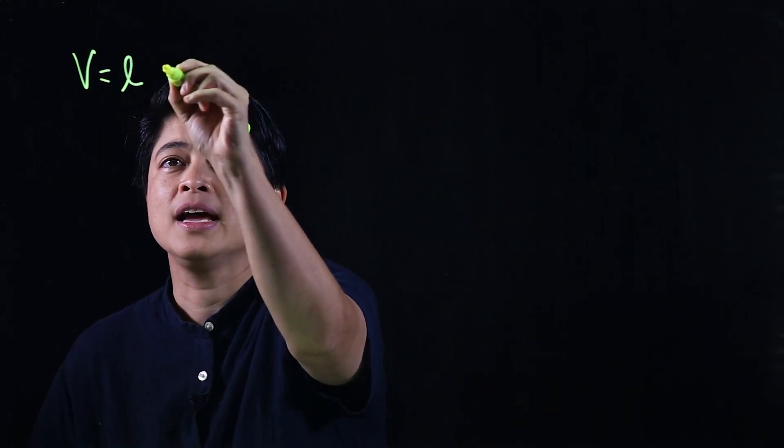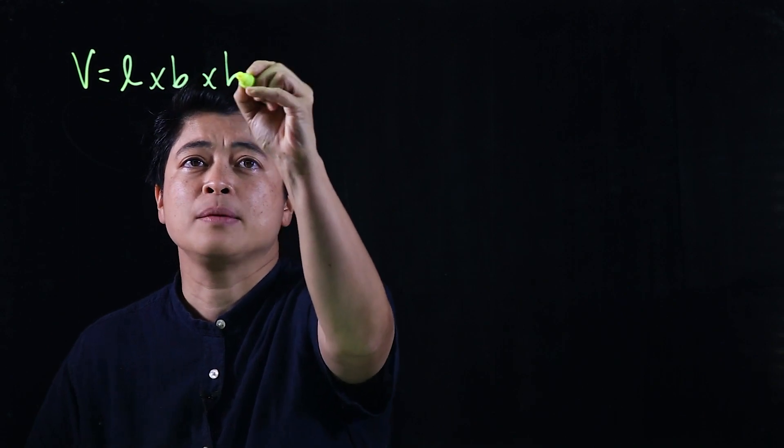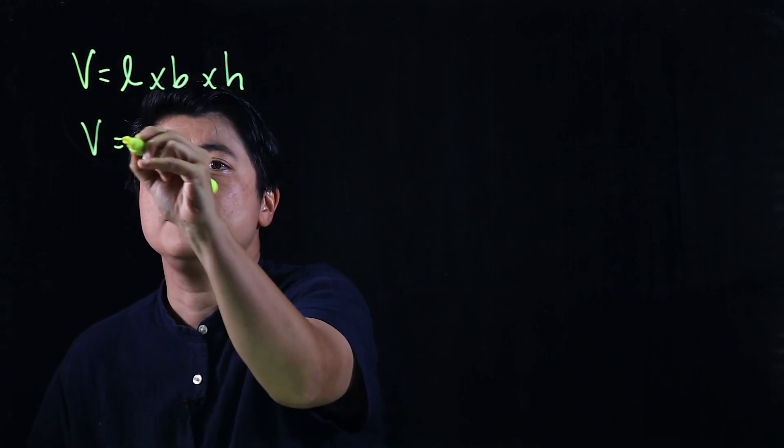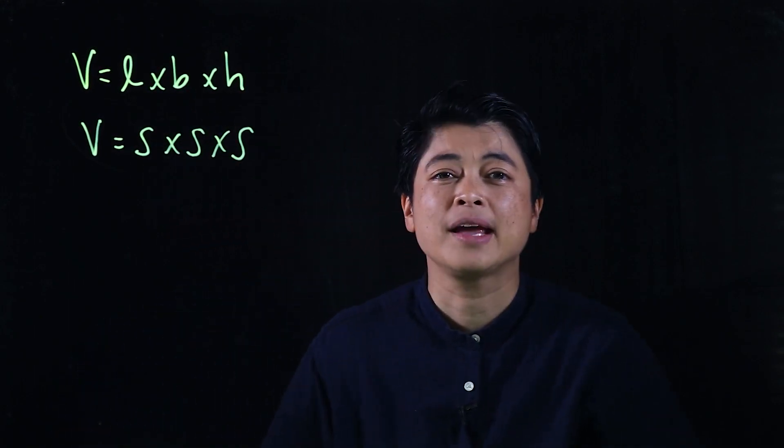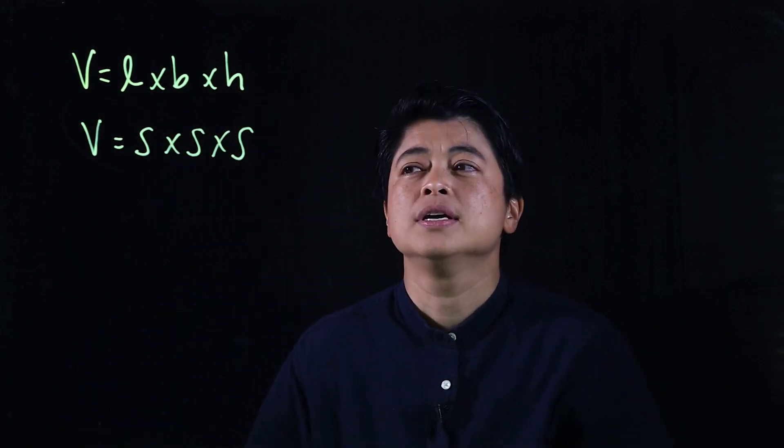Chapter 8, Lesson 2 is volumes of liquid. The same formula is used for solid and liquid because it's just in the container — the only difference is the unit of measurement. Volume is length times breadth times height, and for a cube, volume is side times side times side, or edge times edge times edge.